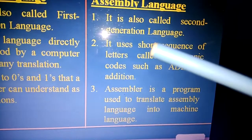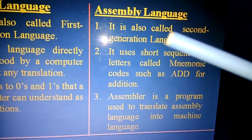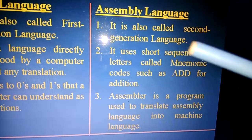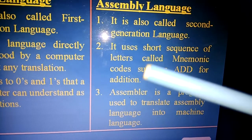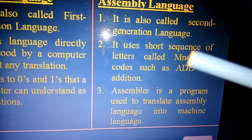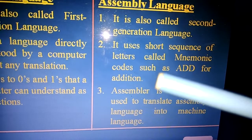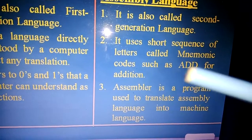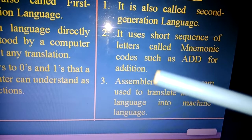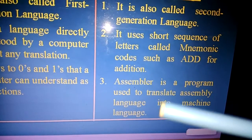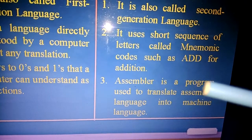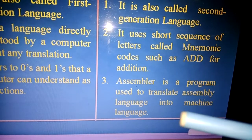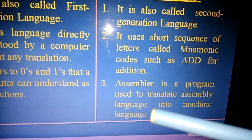For assembly language: it is also called second generation language. It uses short sequences of letters called mnemonic codes, such as ADD for addition. An assembler is a program used to translate assembly language into machine language. So three points for each side.